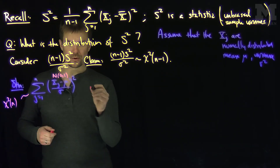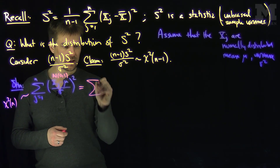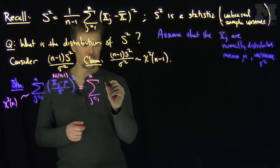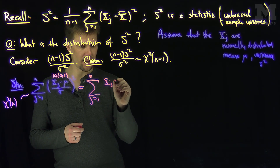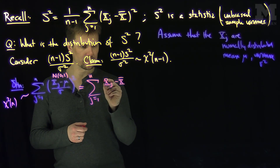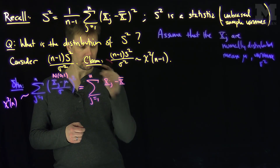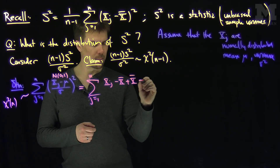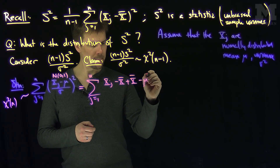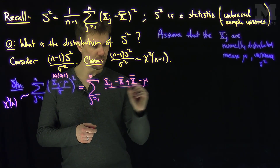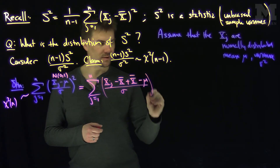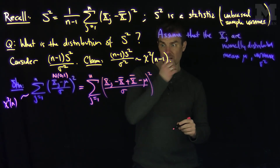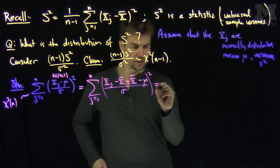Now I am going to add and subtract x-bar inside the expression. For each term in the sum, I write xj minus mu as xj minus x-bar, plus x-bar minus mu, all over sigma, and then square the whole thing. So I add and subtract x-bar, and when we FOIL this out we get three terms.